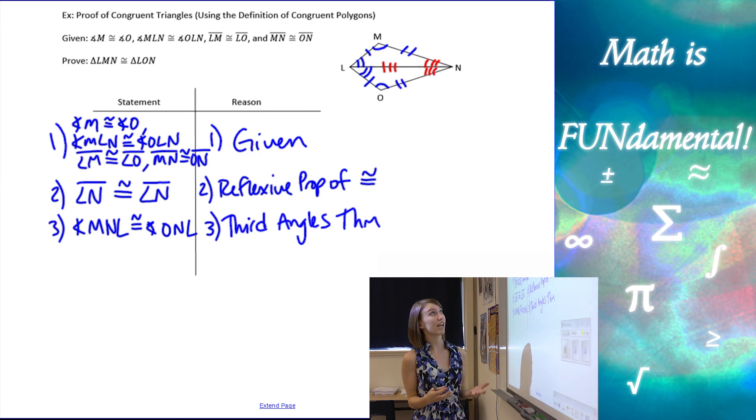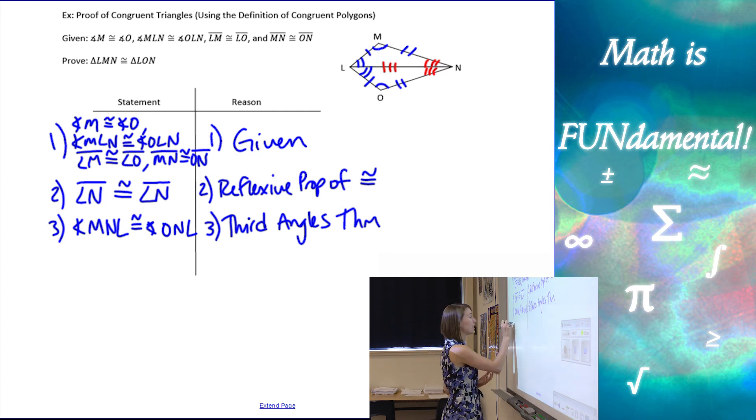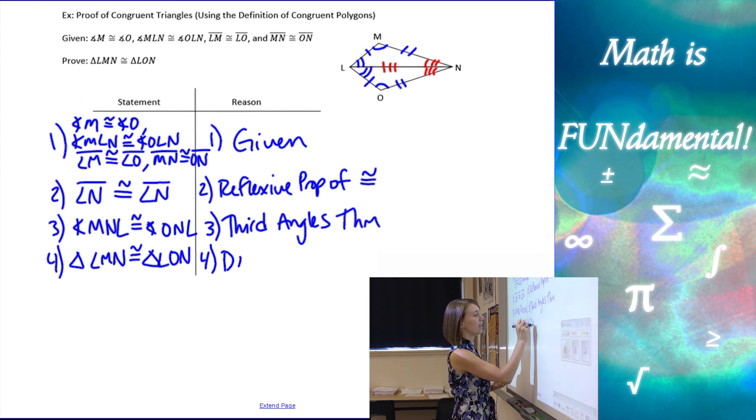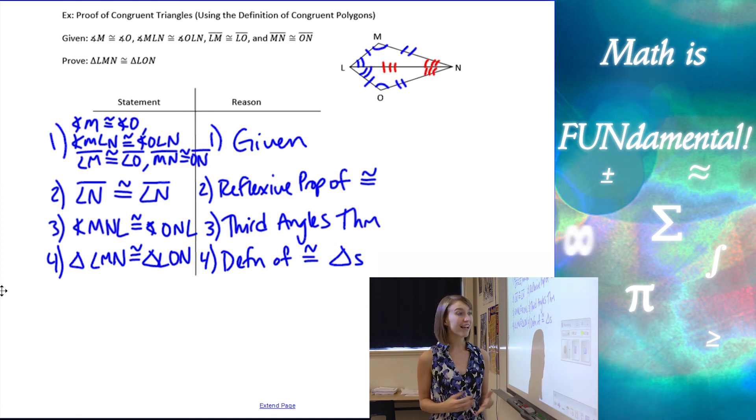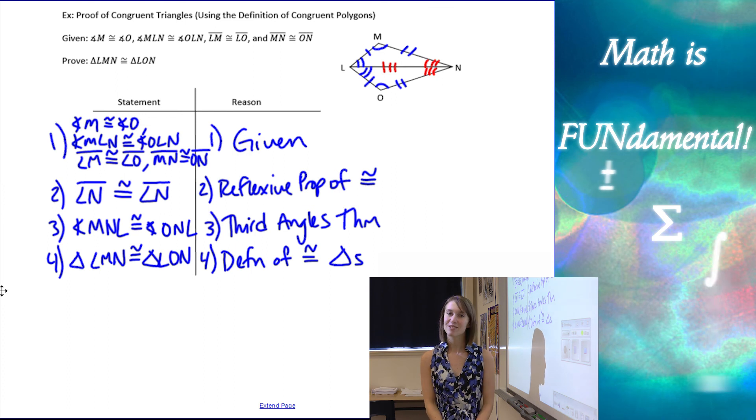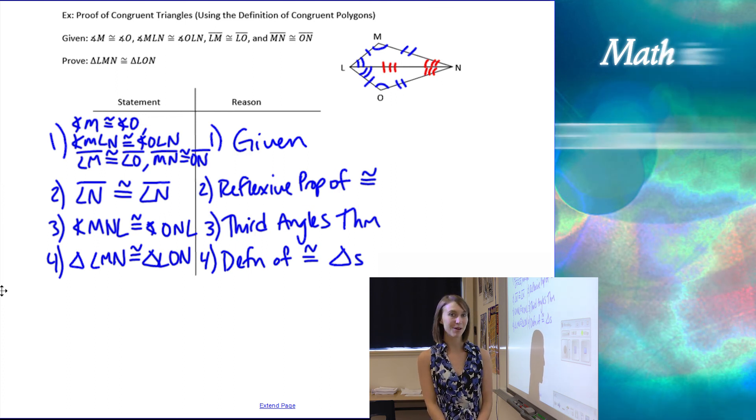So now if we look at our diagram, we are done. We have all three sets of sides congruent, all three sets of angles congruent, which means our triangles LMN and LON have to be congruent by the definition of congruent triangles. You can put congruent figures, but it's nice to be more specific and use what that figure is. Here we're doing triangles. That concludes our lesson for today, so thank you so much for watching, and remember, math is fundamental.